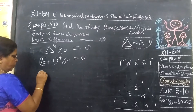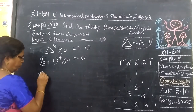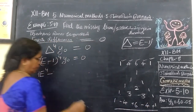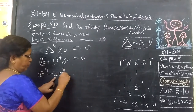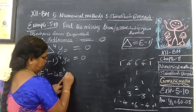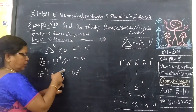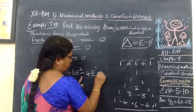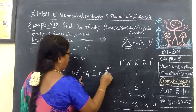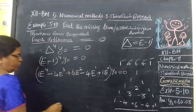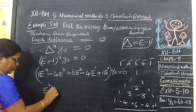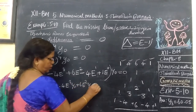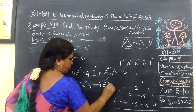Writing this out: 1·E⁴, with alternating signs plus/minus, giving E⁴ − 4E³ + 6E² − 4E¹ + 1·E⁰. So the full expression is: E⁴ − 4E³ + 6E² − 4E + 1 applied to y₀ equals 0, which gives y₄ − 4y₃ + 6y₂ − 4y₁ + y₀ = 0.